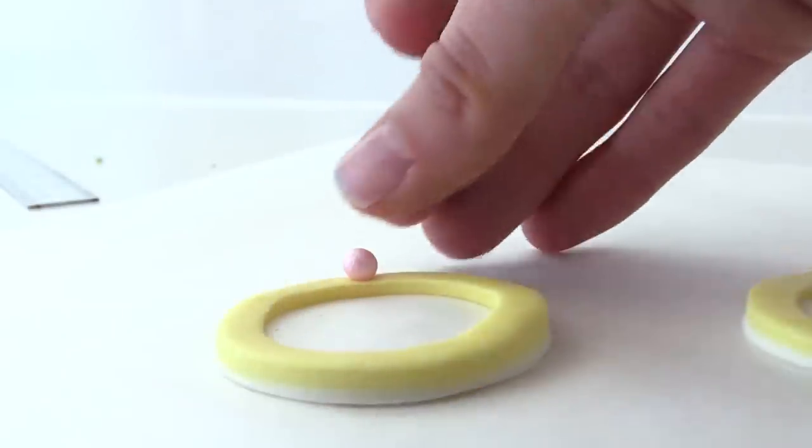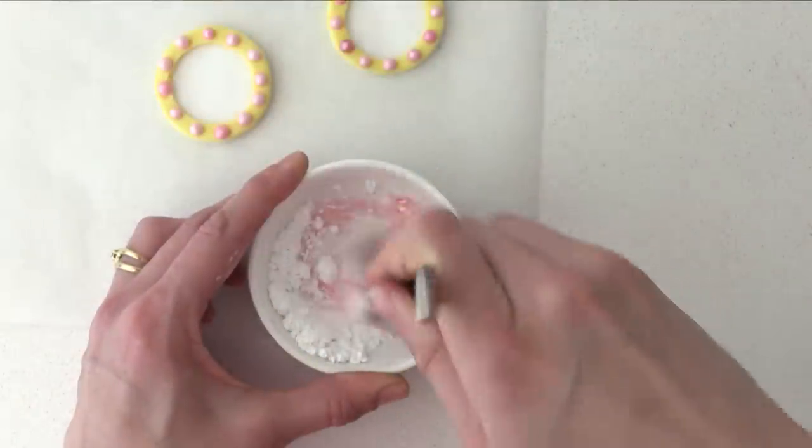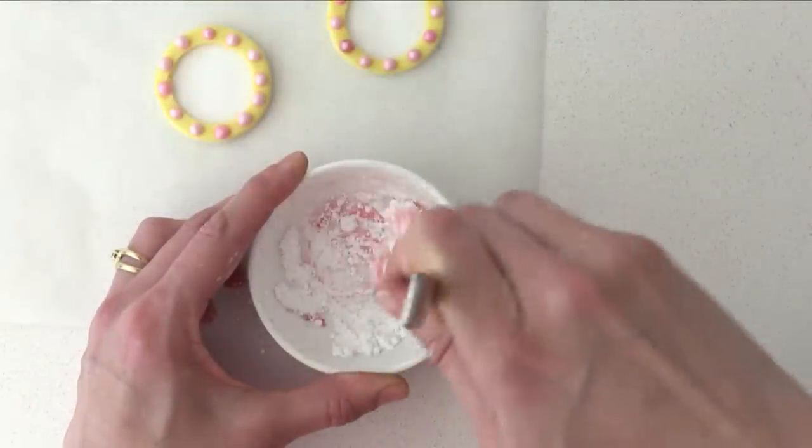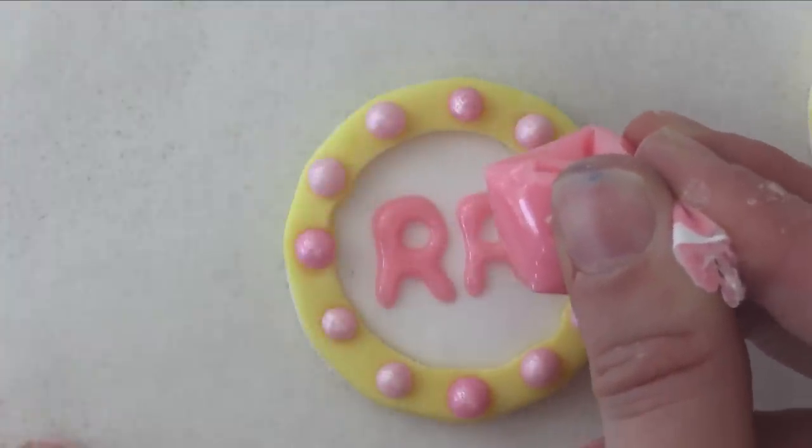And then I'm using soft sugar pearls, I bought these at the supermarket and just pressing them around the edge. Then mix together some icing sugar, red color and a tiny bit of water and use that to pipe up the RR for RR Cherry Pie.